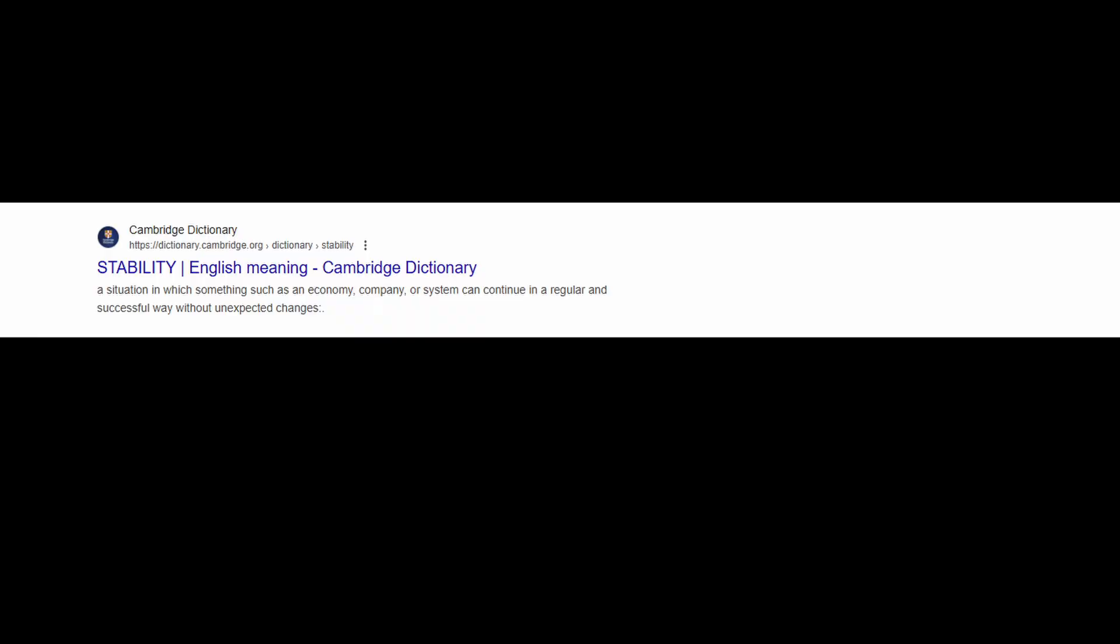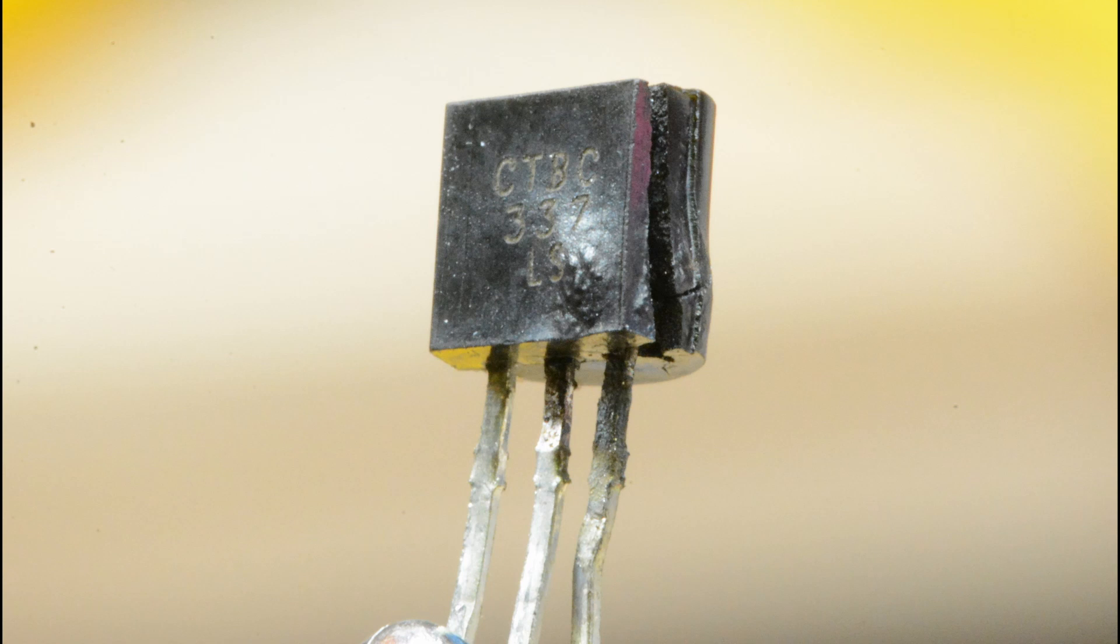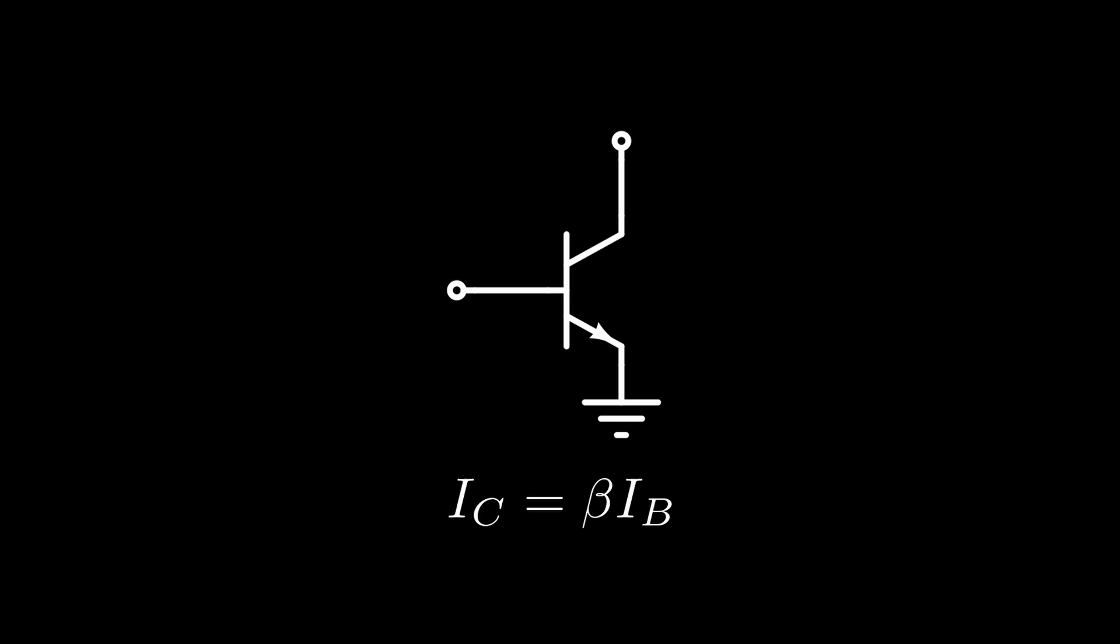Today's topic is stability, and in particular how to evaluate the thermal stability of a bipolar transistor bias network. Let's start right away considering a common emitter stage. You should know that the collector current is equal to the base current times beta.